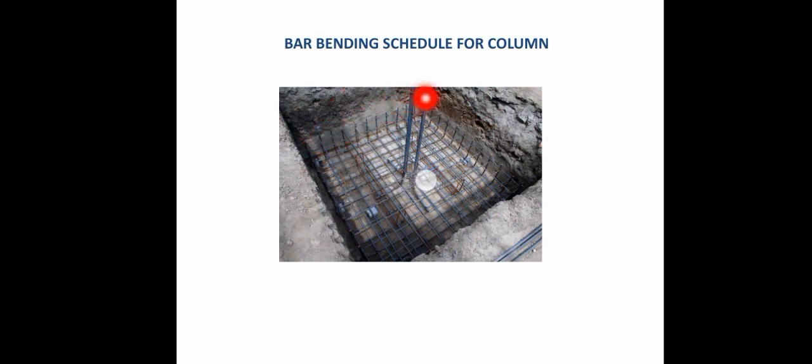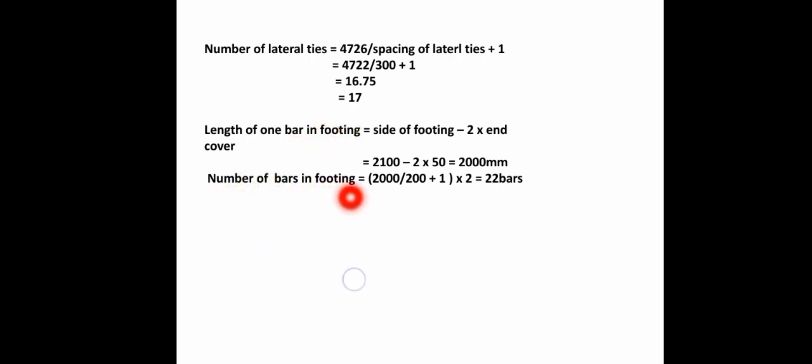Length of one bar in footing = size of footing − 2 × end cover. Size of footing = 2.1m = 2100mm. End cover = 50mm. So 2100 − 2×50 = 2000mm. The length of one bar in the footing is 2000mm.